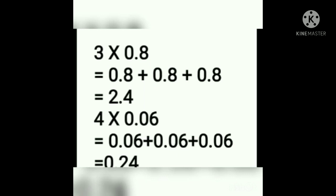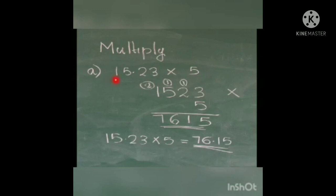The pattern is: after the decimal point in the question, however many places there are, the answer will have the same number of decimal places. In multiplication, we first avoid the decimal point and multiply the numbers as usual. Once we get the product, we insert the decimal point by counting from the unit place, using the number of decimal places from the original question. For example: 15.23 multiplied by 5. One number is decimal, the other is whole.